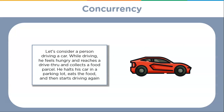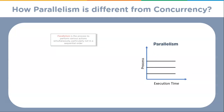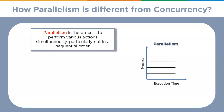Let's consider a person driving a car. While driving, he feels hungry and reaches a drive-through and collects a food parcel. He holds his car into a parking lot, eats the food, and heads to his home. Here the person is capable of performing both actions simultaneously — that is, having his food while driving — but he performs the sections in a sequence. This is concurrency.